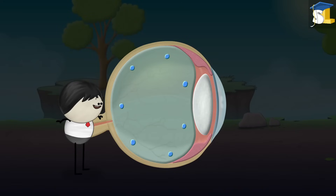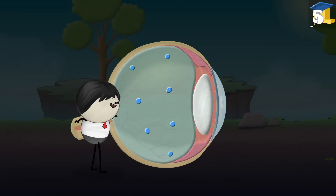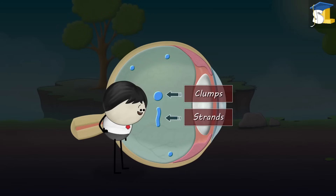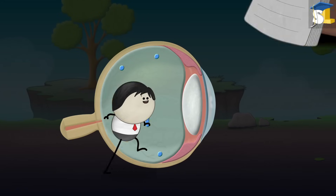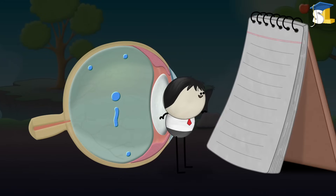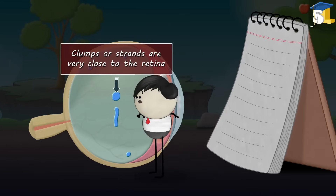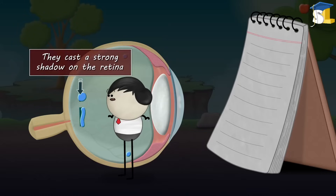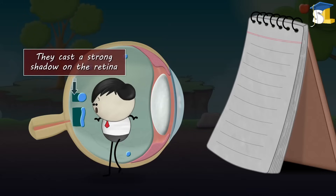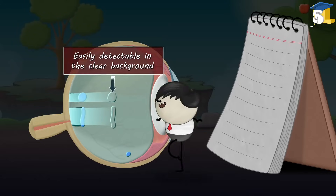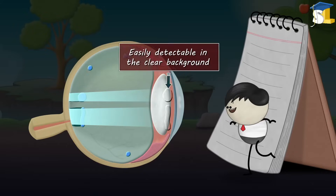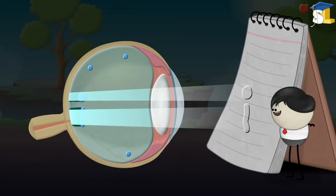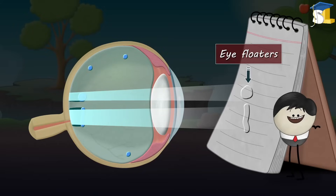But sometimes these fibers tend to come together forming clumps or strands. When we look at a clear sky or a blank page and the clumps or strands are very close to the retina, they cast a strong shadow on the retina, making them easily detectable in the clear background and thus forming eye floaters.